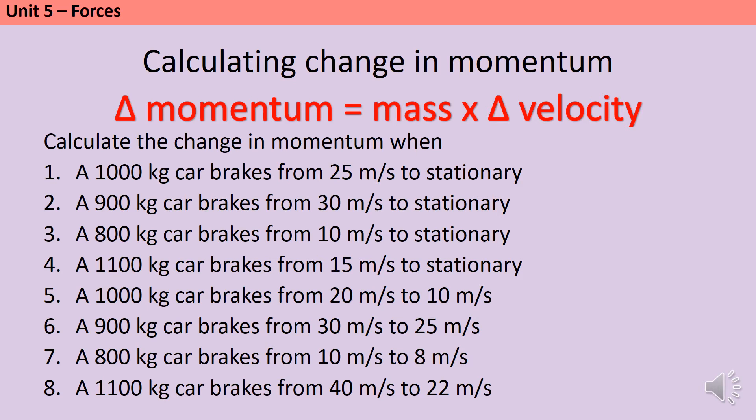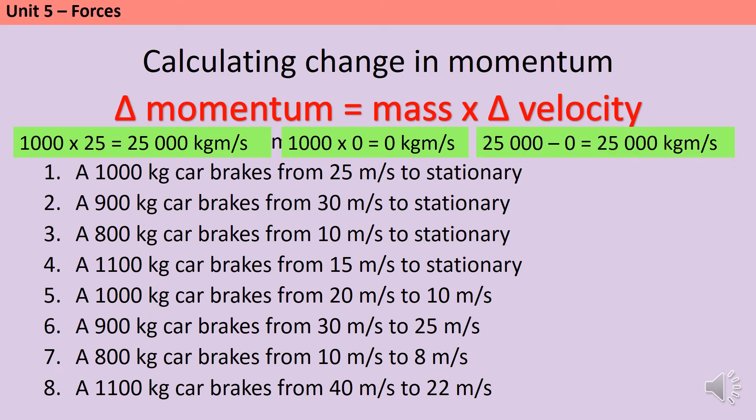So, for this first question, our car still has a mass of 1,000 kilograms. So, either we can work out how much momentum it has at the start, 25,000 kilogram meters per second, and then how much momentum it has at the end, well it's stationary, so of course it's zero, I don't actually need to do a calculation there. And then the difference between those two is of course 25,000, because actually at the end it's zero, so the difference between any number and zero will just be the number.